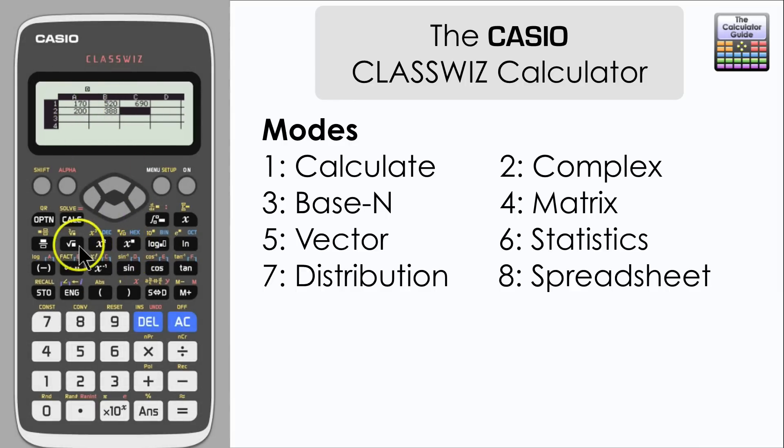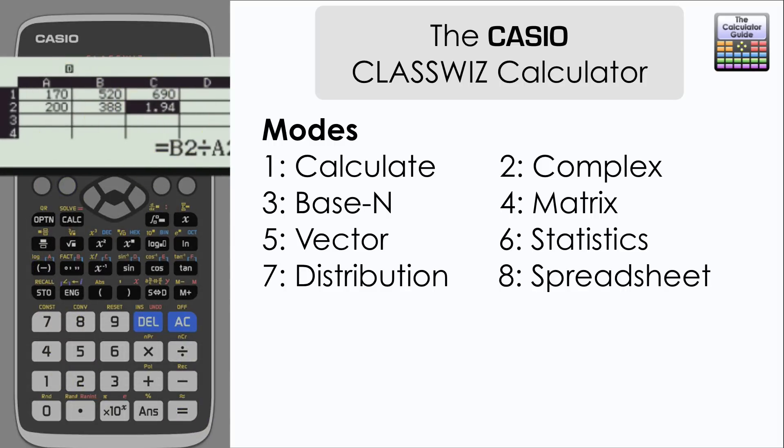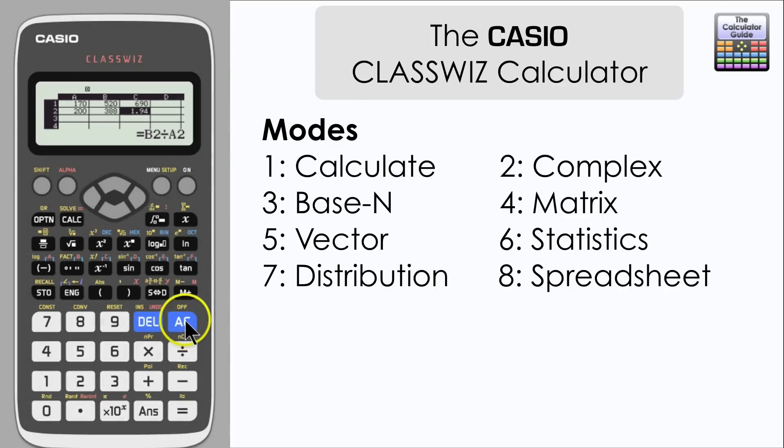Let's have another go at that. Let's use the data from A2 and B2. Let's do B2 divided by A2. Press equals here and here we can see the calculator has done that particular sum. So great for spreadsheet functionality there, definitely a new feature and I'm sure there's a lot more besides what I've just shown you there contained within that function.